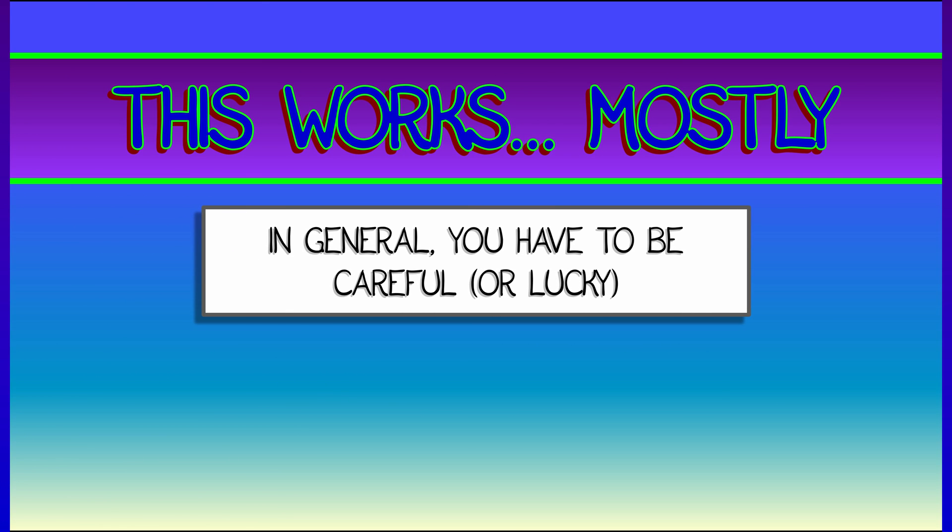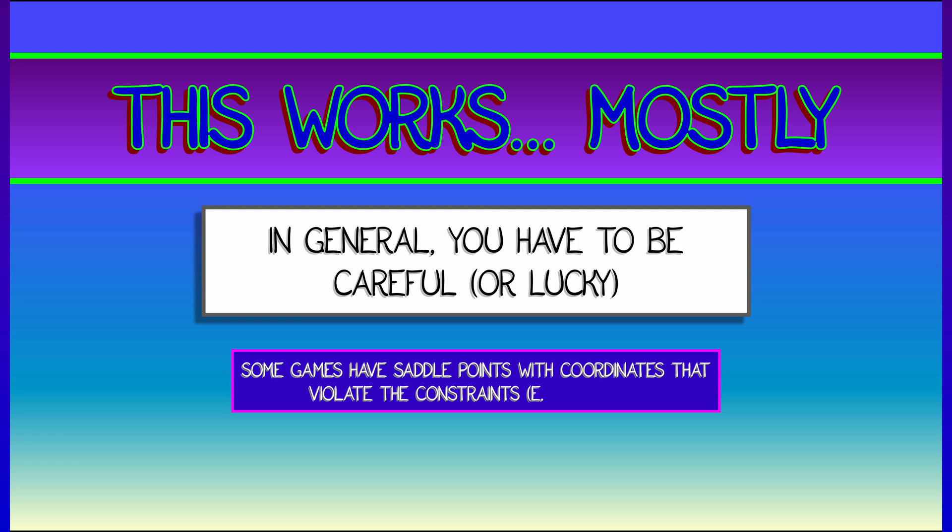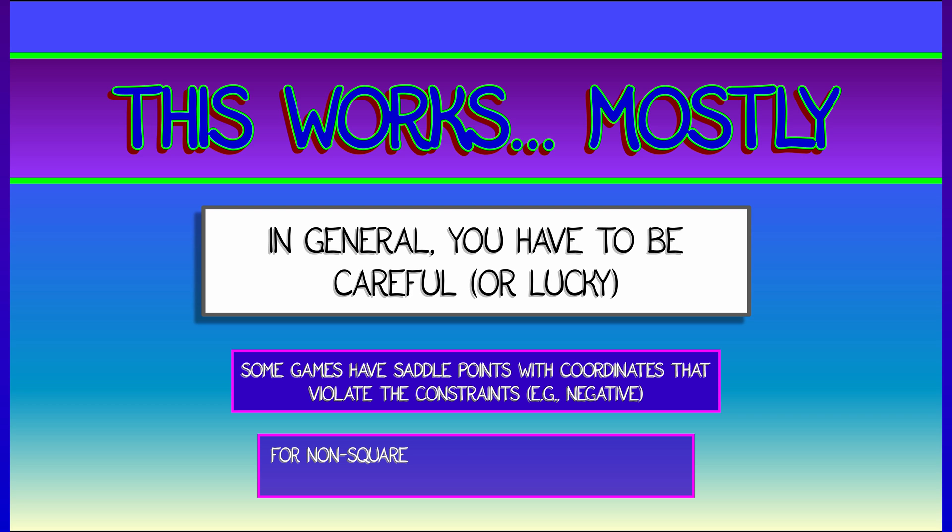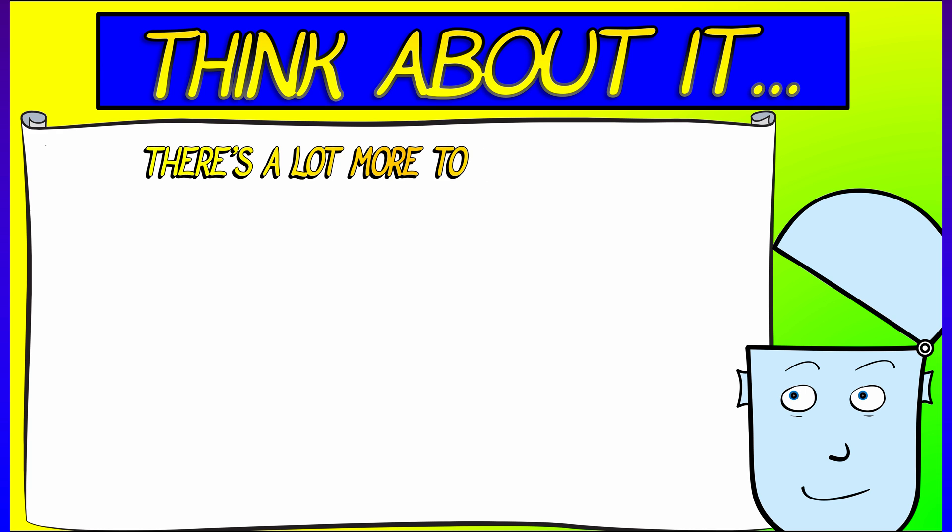Now, in general, this stuff works most of the time. You have to be a little bit careful. Some games have saddle points with coordinates that violate the constraints. They might give you negative probabilities. That's not cool. If you're working with matrices that are not square matrices, you're going to need a different approach for finding the Nash equilibrium. The straightforward optimization saddle point result that I've shown you doesn't hold in general.